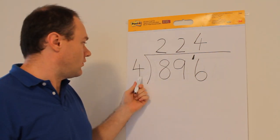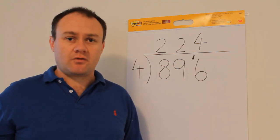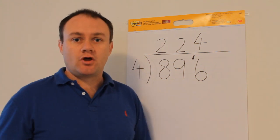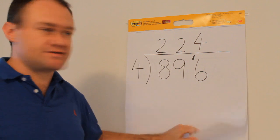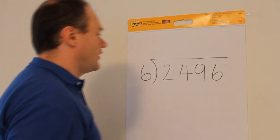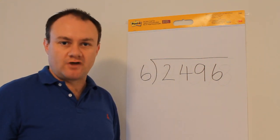896 divided by four equals 224. Or to say it another way, four goes into 896 224 times. Right, I'll move straight to the second example. The second question: What is 2496 divided by six?